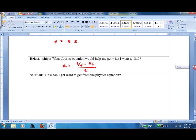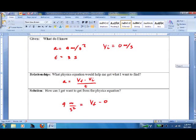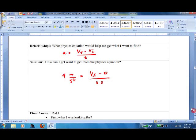And let's go to it. 9 meters per second squared equals, pardon me, V final minus 0, one more time, 9 meters per second squared over 3 seconds. Like before, I'm going to rewrite it. 9 meters per second squared over 1 equals V final over 3 seconds.